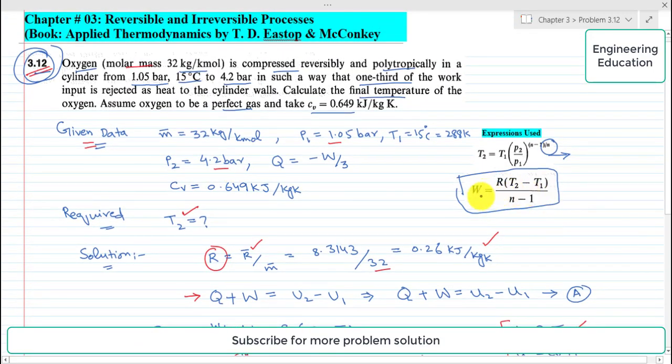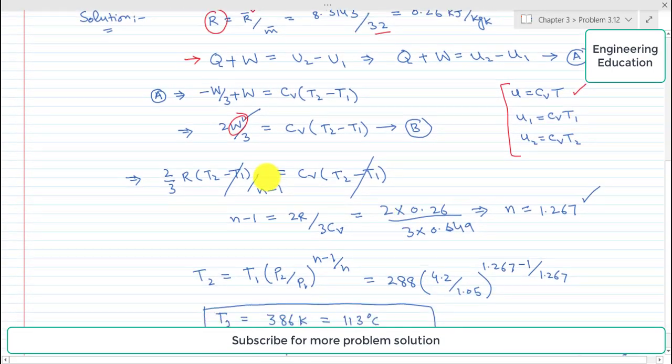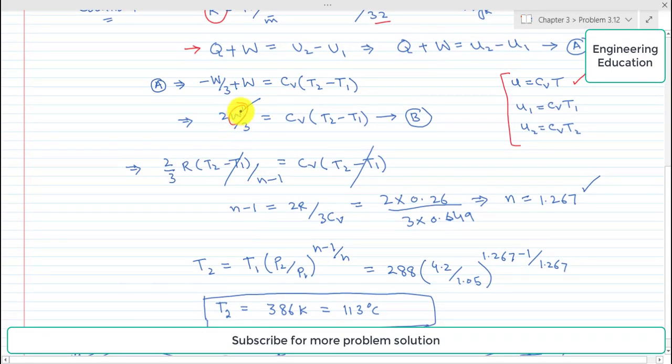So putting this expression, we get 2 by 3 into R times T2 minus T1 over n minus 1 equal to Cv times T2 minus T1.